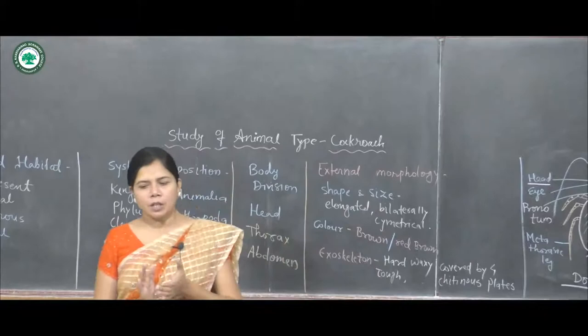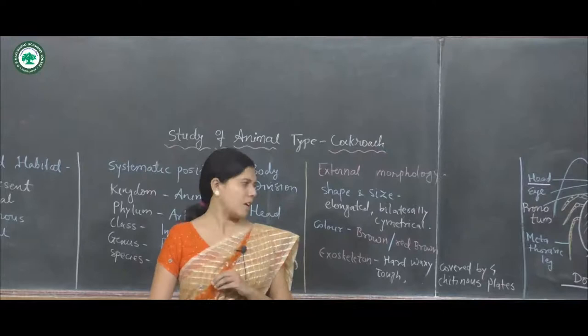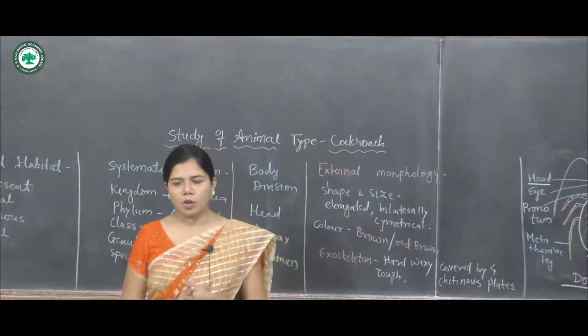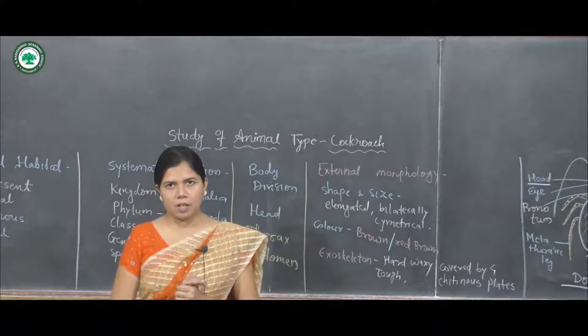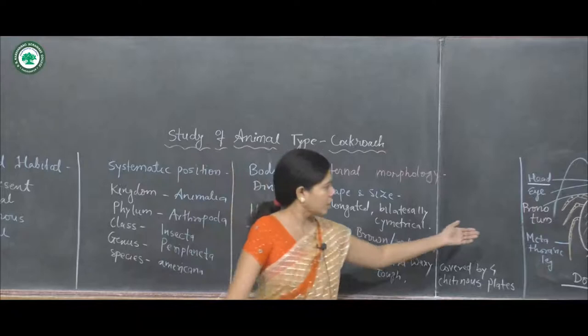Each body segment of the cockroach is covered by four chitinous plates: the dorsal tergum, the ventral sternum, and two lateral pleurons. This is visible in the dorsal view of the cockroach.